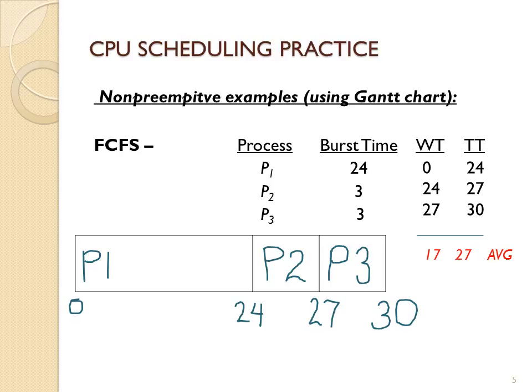For turnaround time, you find which time the process left the system. The turnaround time for P1 is 24, for P2 is 27, and for P3 is 30. The average turnaround time using First Come First Serve with these three processes is 27 time units. Because we have short processes behind the long processes, we have what's called the convoy effect.